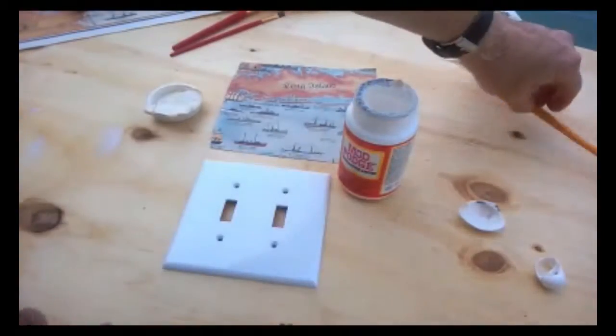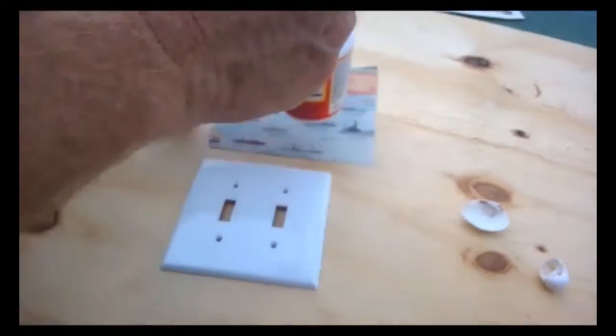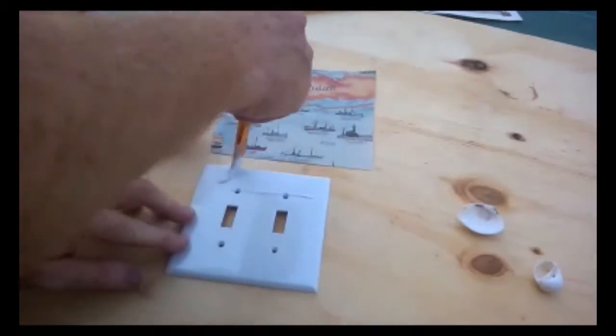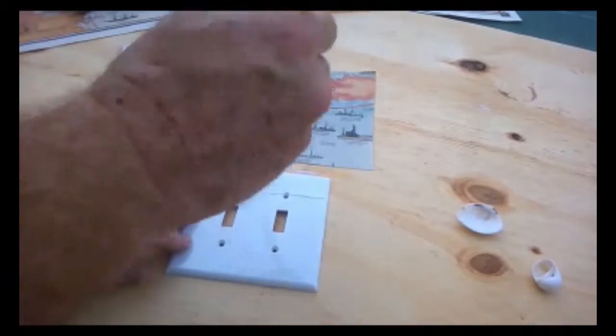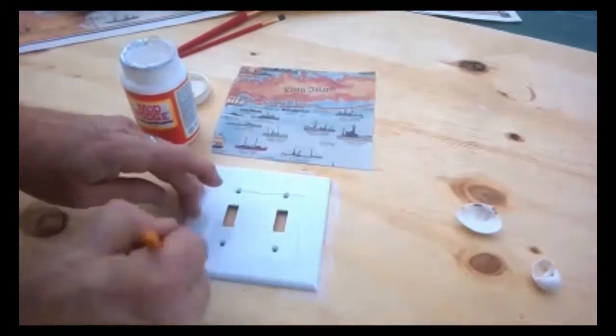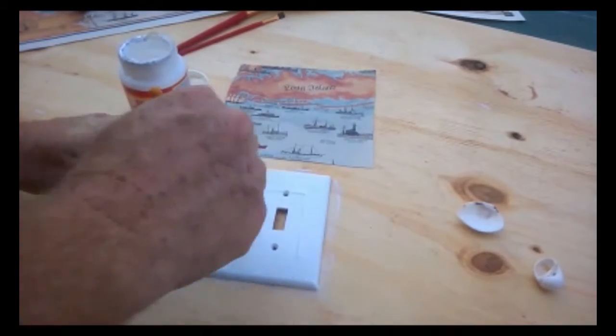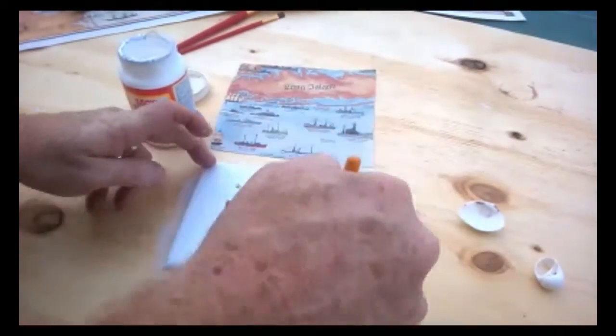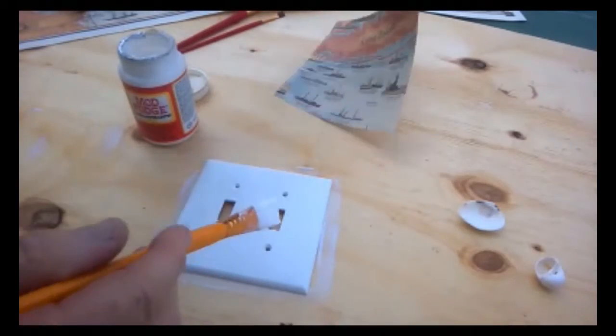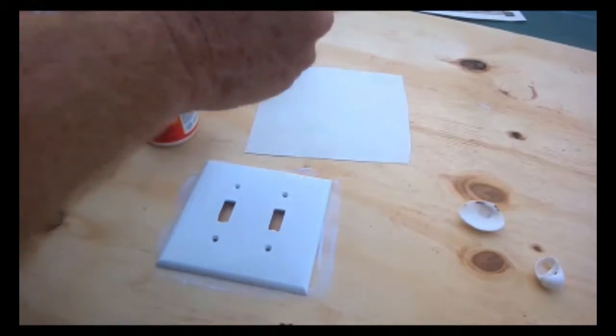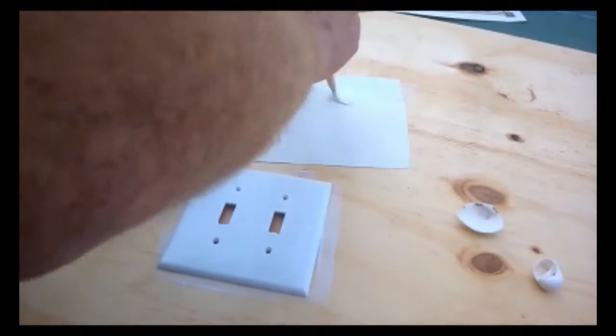Once the section is cut out we're going to use mod podge to adhere that to the plastic switch plate cover. We're going to give a good coating of the mod podge to the switch plate cover itself. And then we're also going to flip over the section of the chart and give a good coating of mod podge to the back of the chart.